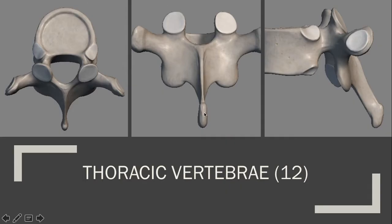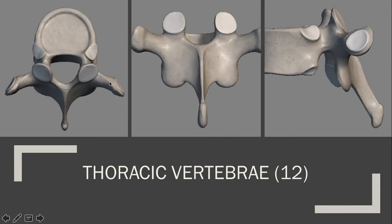Next is the thoracic vertebrae. You have 12 of these. The best way to tell the difference between a thoracic and a cervical or a lumbar is they don't have those transverse foramen, and they have these really long diagonal spinous processes in the back. They also have something unique to just thoracic vertebrae: because the thoracic vertebrae are in your chest cavity where your ribs are, they have this costal facet where ribs attach to it on the transverse process.